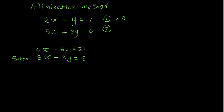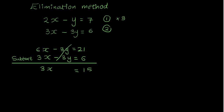Subtracting the equations: 6x minus 3x gives me 3x. Then minus 3y minus minus 3y gives me 0, so that cancels out. And 21 minus 6 is 15. So 3x equals 15, and dividing both sides by 3 gives me x equals 5.